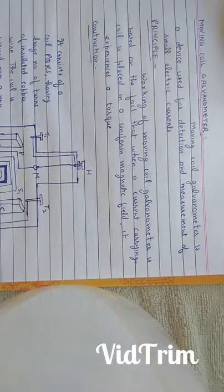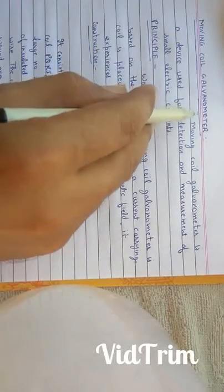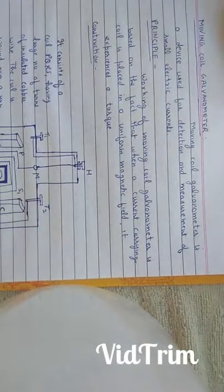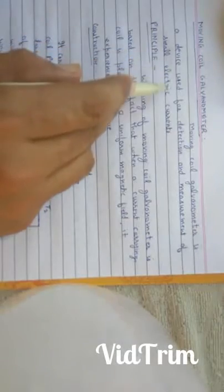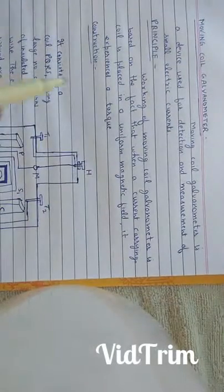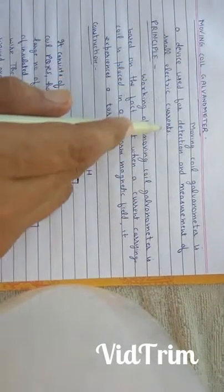Friends, our next topic is moving coil galvanometer, which is very important from exam point of view. Moving coil galvanometer is a device used for detection and measurement of small electric currents.